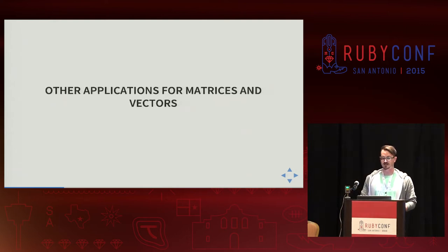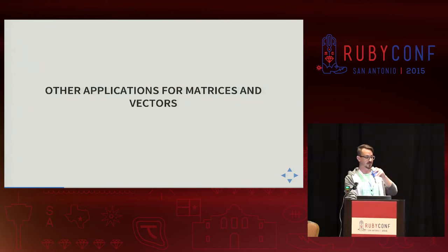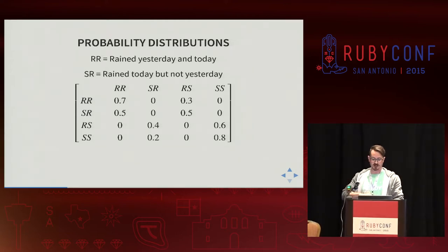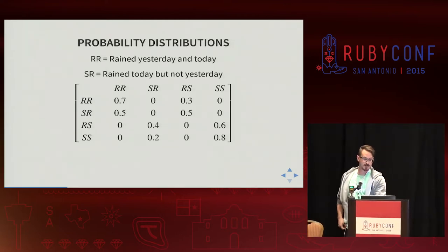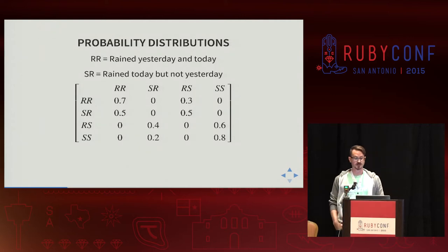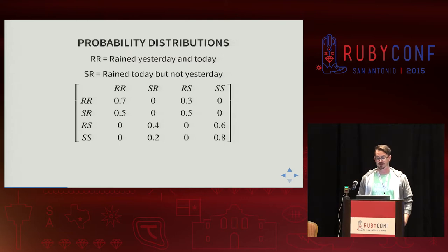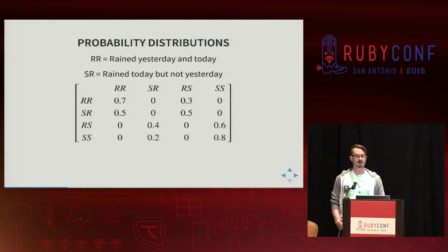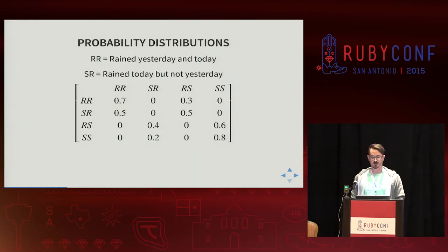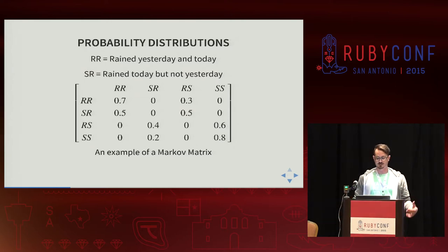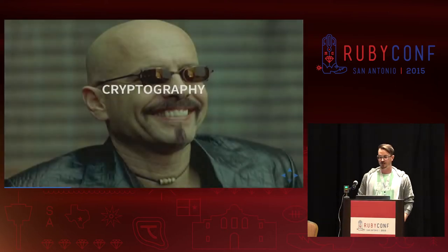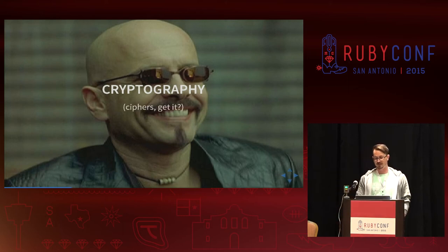What are some other applications for matrices and vectors that we might not think about all the time? Well, you can represent probability distributions in a matrix. This is a Markov matrix — the first row breaks out a probability distribution of whether it will be rainy or dry. Each row adds up to one, which is a key property. So that's a representation of the state of a system.